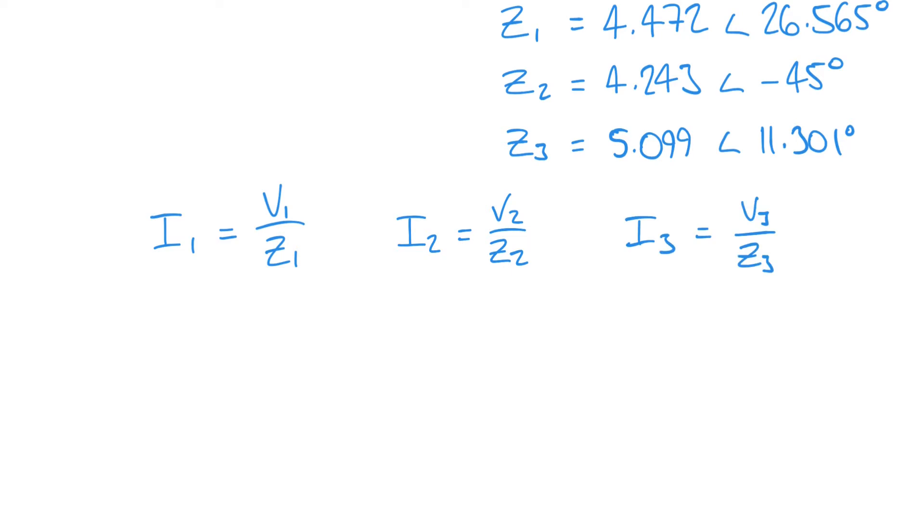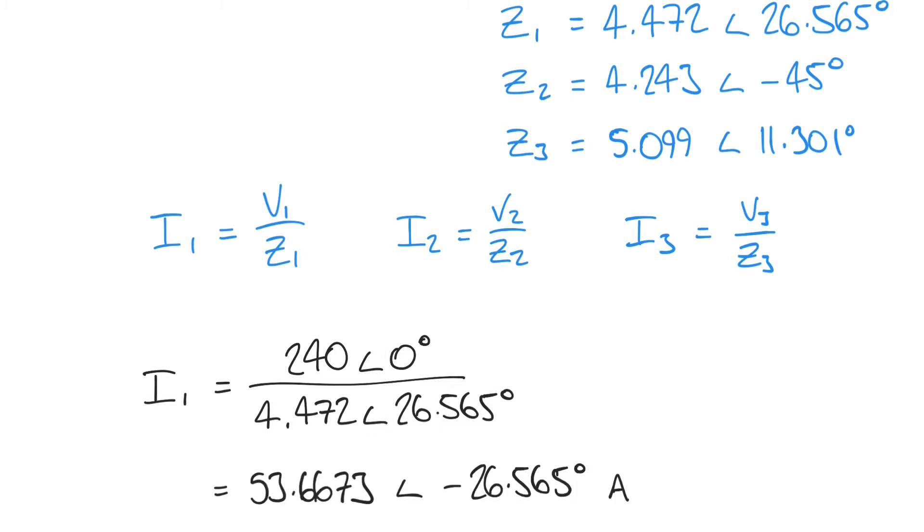When we do that, we'll do an example here with I1. I1 equals V1 over Z1, so that's 240 at an angle of 0 degrees divided by Z1 which was 4.472 at an angle of 26.565 degrees. When we do a division in polar form we're simply dividing the magnitude, so 240 divided by 4.472, and we're subtracting the angles. We get a result here for I1 of 53.6673 at an angle of minus 26.565 degrees in amps.